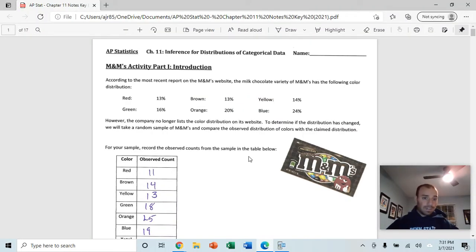Alright, we are moving into Chapter 11 which is all about chi-squared testing. It's the last of our significant tests that we need to run. We have this chapter and then we have Chapters 3 and 12 which deal with linear regression.